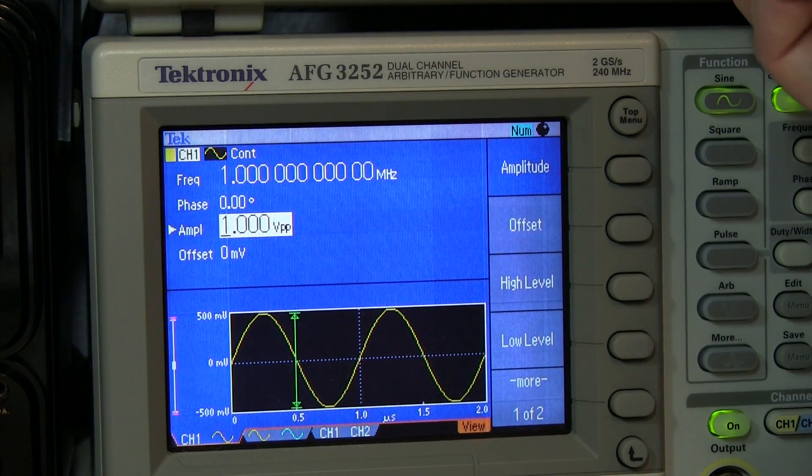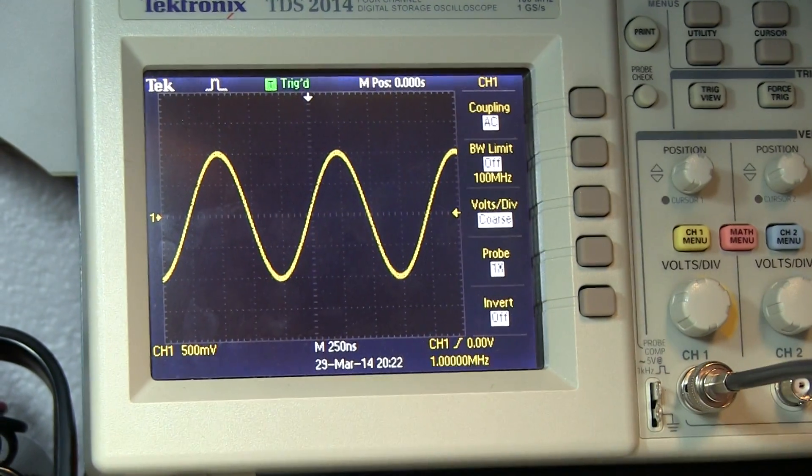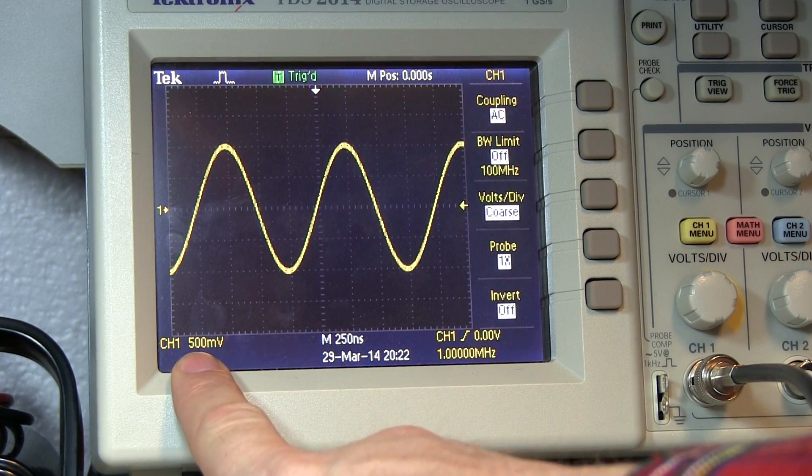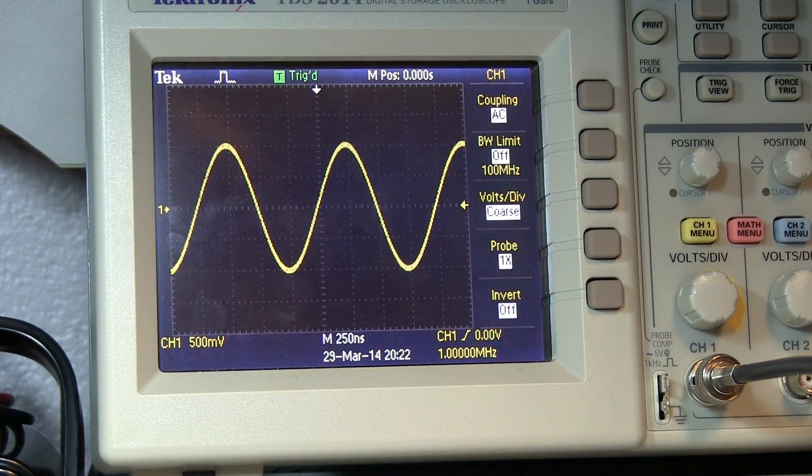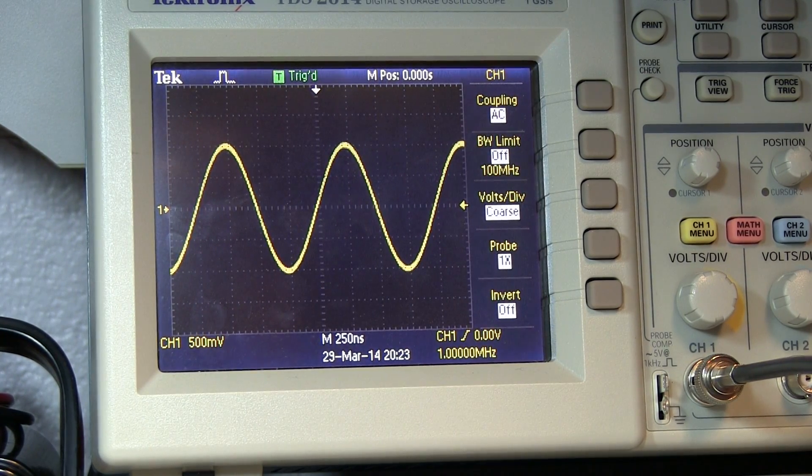So if we look at the scope, we're seeing our one megahertz signal, 500 millivolts per division. And if we look carefully, I can see I've got four divisions, so that's two volts peak to peak.